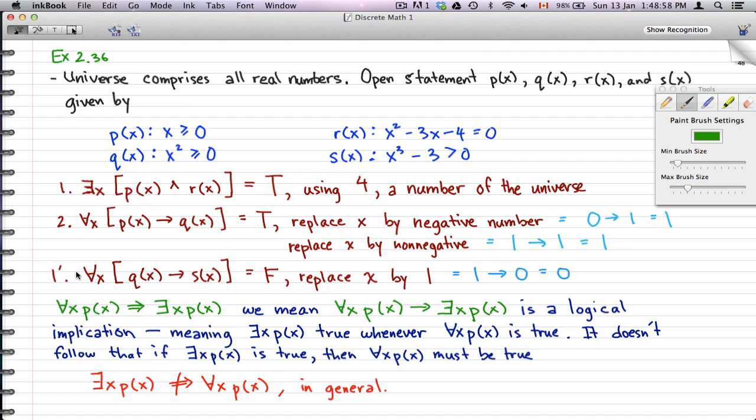Now, the third one we have here is Qx implies Sx. Now, that is false. If we just replace x by 1, that will give us 1 implies 0, because 1 minus 3 is not greater than 0. And that will give us a statement that falsifies this, or that will give us an answer that falsifies this. What this statement is telling us is that for all x, this is true. Well, we just contradicted that by using 1, by saying that there is just 1 number in our universe of real numbers that makes the statement false. So, that's a simple example.